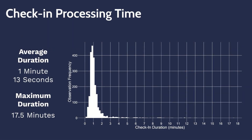To investigate the effect of transitioning from a three-step to a two-step ballot marking device-based voting process, we must first understand the processing times for the steps in each process. The check-in step for both processes is identical, with an average check-in time of one minute and 13 seconds and a maximum of 17 and a half minutes. A distribution chart of check-in times shows the majority of voters taking between 45 seconds and one minute and 14 seconds to check in.